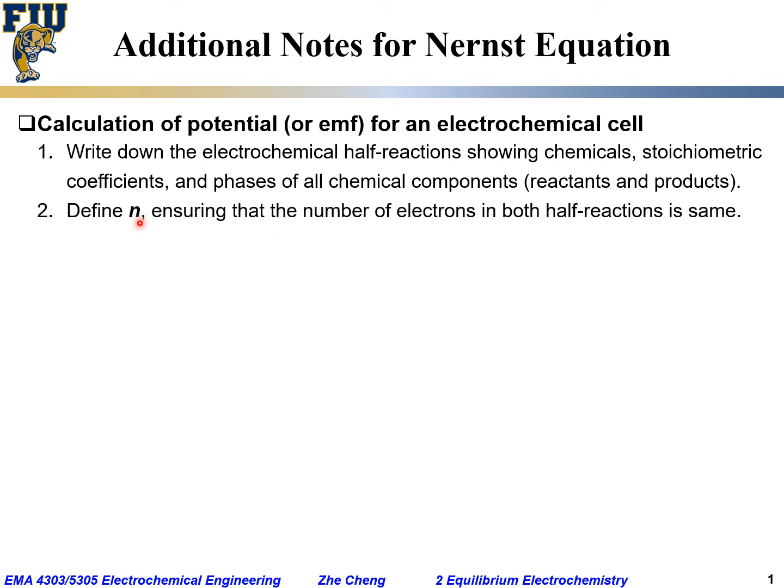Define the n value, which means the number of electrons that got transferred through that reaction, and make sure that the number of electrons in both half cell reactions would be the same, and define the activity for all chemical components.